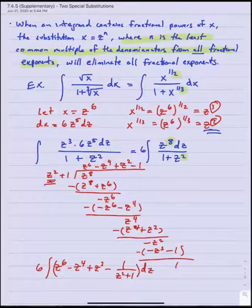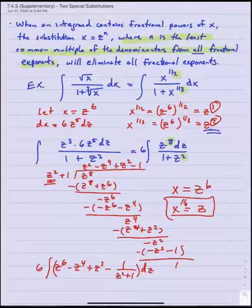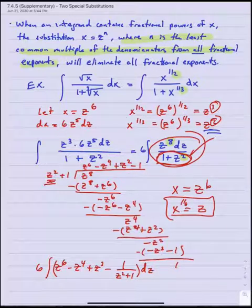I'll let you finish the integration from there — that's just power rule application. Don't forget that to resubstitute back in terms of x, remember our substitution was x equals z to the sixth, so z equals x to the one-sixth. The upshot here is that this turned into a rational function with integer powers — all of the fractional exponents were removed. So don't be surprised if integrals like this require long division, inverse trig antiderivatives, or even partial fractions after the fractional powers have been eliminated.